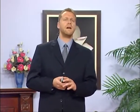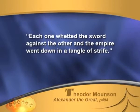Historian Theodore Mommsen writes in Alexander the Great on page 494: 'Each one wetted the sword against the other, and the empire went down in a tangle of strife.'